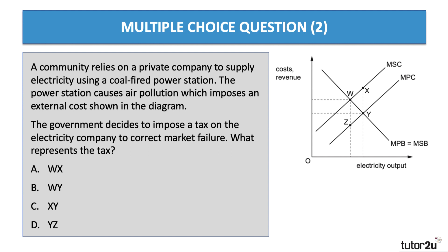Question two. Similar question — negative externality from production, social cost above private cost. The government has imposed a tax to try to internalize the externality. The tax that needs to be imposed is the vertical distance between social and private cost. So the correct answer is XY. It could also have been WZ, but WZ does not appear as one of the options. So a tax of XY is enough to internalize the externality.